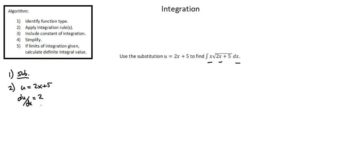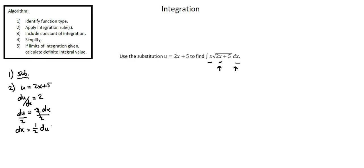Notice in the original integral we have 2x plus 5 — we're going to replace that with u. We have a dx term in the original. We have a dx term in our second line of step 2. Since dx is in the denominator, I'm going to multiply both sides by dx. I have du equals 2 dx. Now I'll divide both sides by 2, and I've isolated dx: it is 1 half du. Looking at our original integral, we now have a substitution for 2x plus 5, a substitution for dx, and now we need a substitution for x.